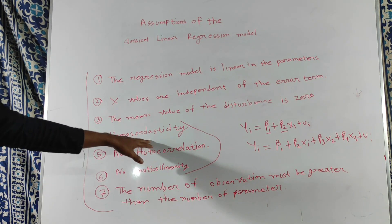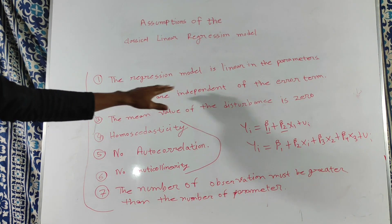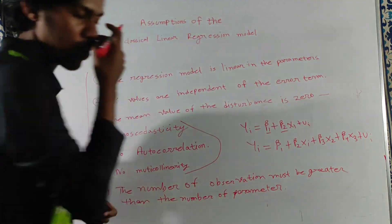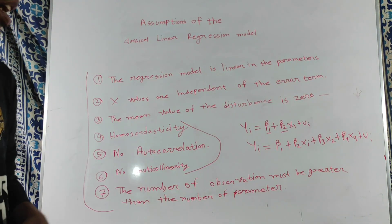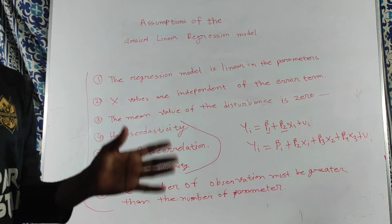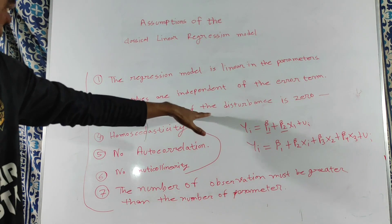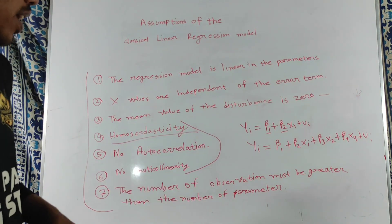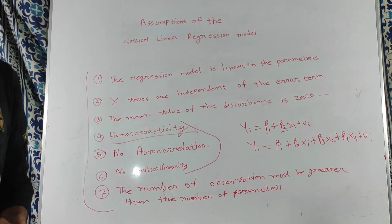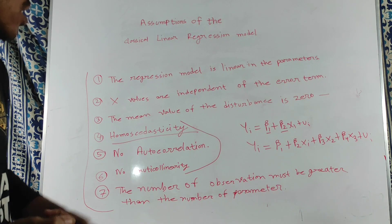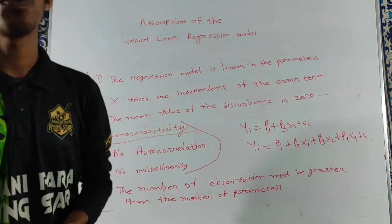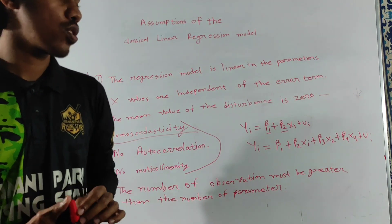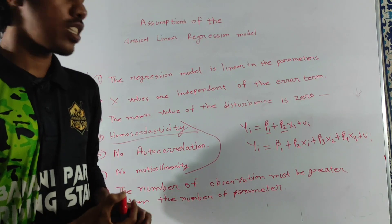The error term's mean value of the disturbance is zero. In this video, we are going to use the Gauss-Markov theorem. We will use the OLS BLUE — Best Linear Unbiased Estimator. Given the assumptions of mean disturbance equal to zero, homoscedasticity with constant sigma-squared, OLS provides the BLUE estimator.